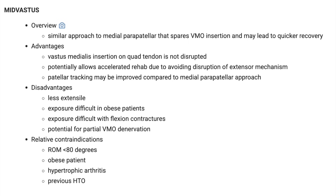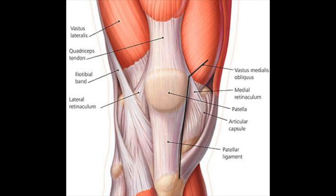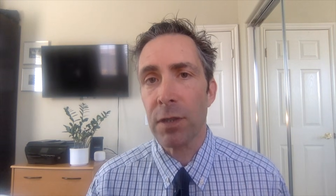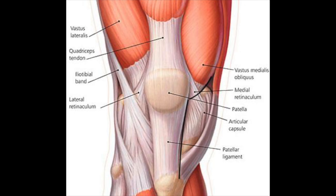The mid-vastus approach is similar to the parapatellar, but there's an incision that exits obliquely into the VMO muscle, which preserves the insertion of that muscle. The idea is that it doesn't disrupt the extensor mechanism — the quad tendon, kneecap, patellar tendon, and where they attach to the quad muscle and the tibia — and this might accelerate rehab. The sub-vastus approach comes even more obliquely, underneath the muscle, sliding it over to the other side of the knee so it doesn't disrupt the extensor mechanism at all.